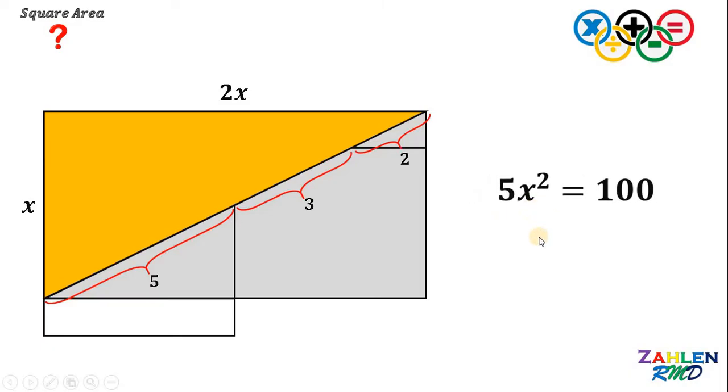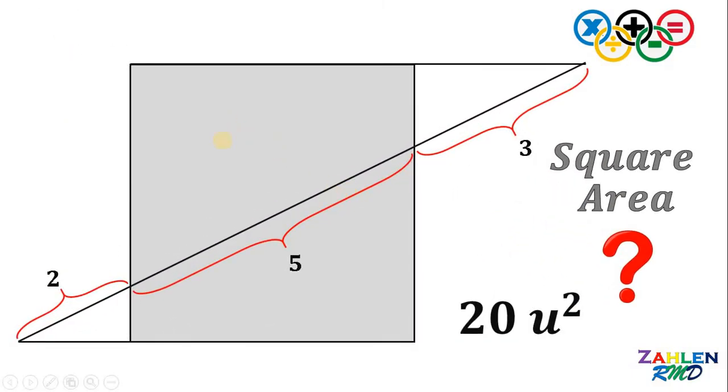To solve for x squared, divide both sides by 5. We have 100 over 5, or simply x squared equals 20. And we know that the area of this square is just x squared. Therefore, we can say that the area of this square shaded in gray is simply 20 square units.